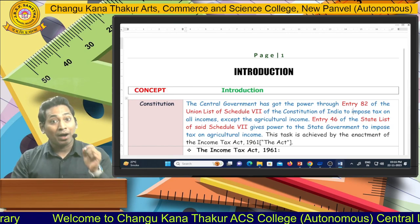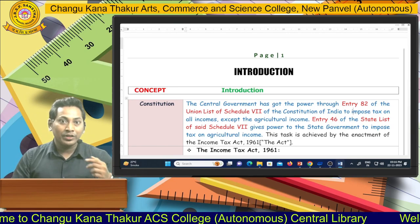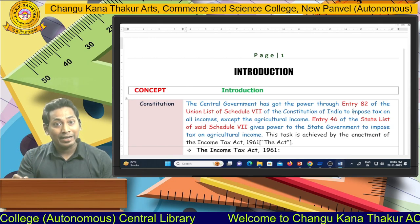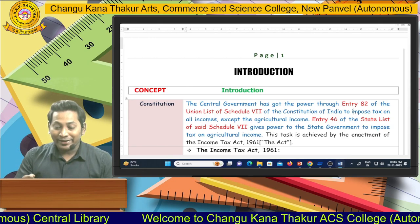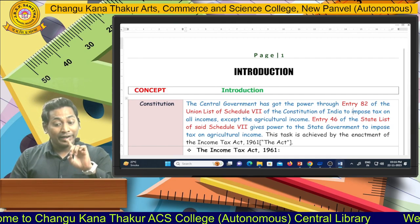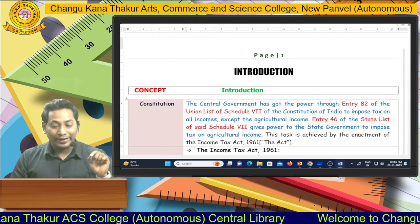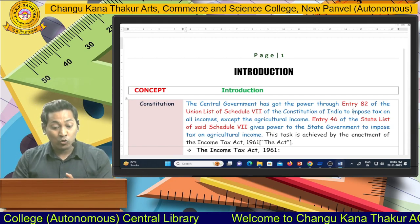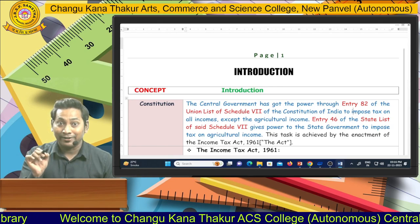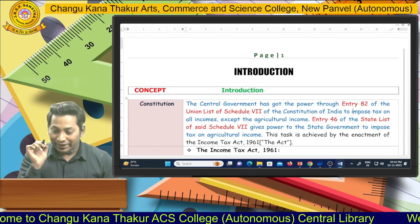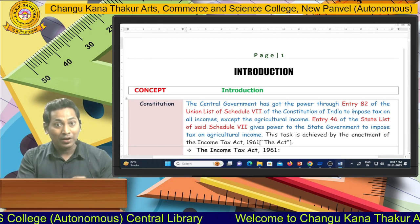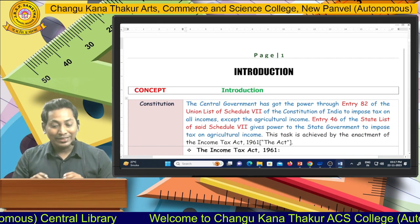The central government has power through Entry 82, and if you check my indirect tax videos, I have noted Entry 82, 83, 84, and 85 there. Furthermore, Entry 46 of the State List of Schedule 7 gives power to the state government. Entry 82 gives power to the central government, and Entry 46 gives power to the state government to tax agricultural income. Entry 82 restricts central government from imposing tax on agricultural income, while Entry 46 gives that power to the state government.